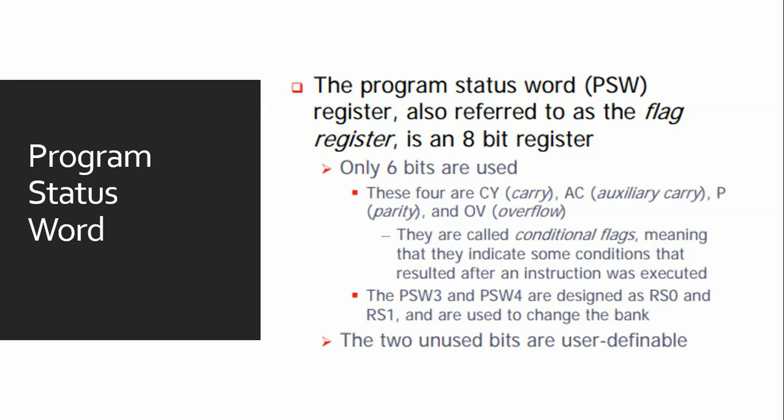First, we will see that the program status word register, also referred as the flag register, is an 8-bit register. Six bits of them are used: carry, auxiliary carry, parity, and overflow. These are called conditional flags, meaning that they indicate some conditions that result after an instruction was executed.